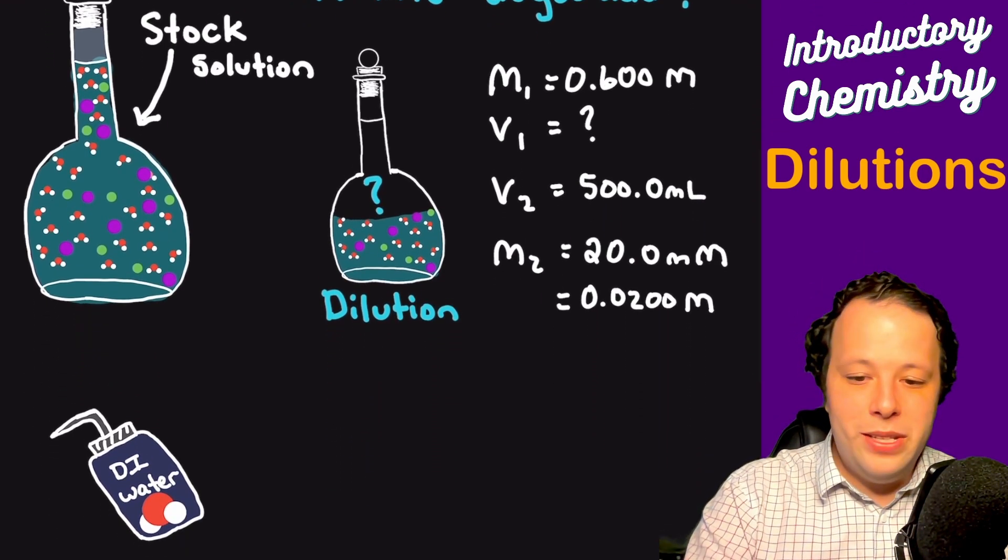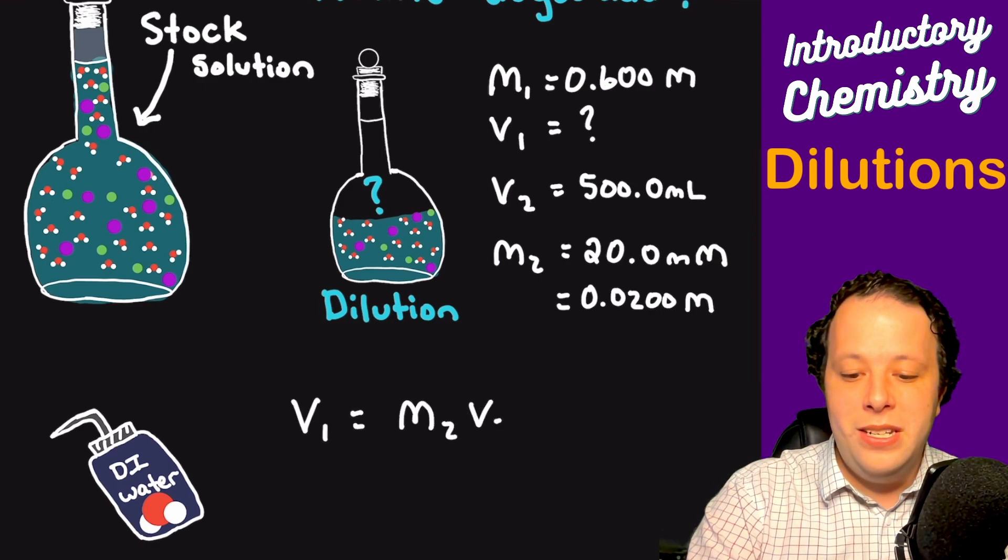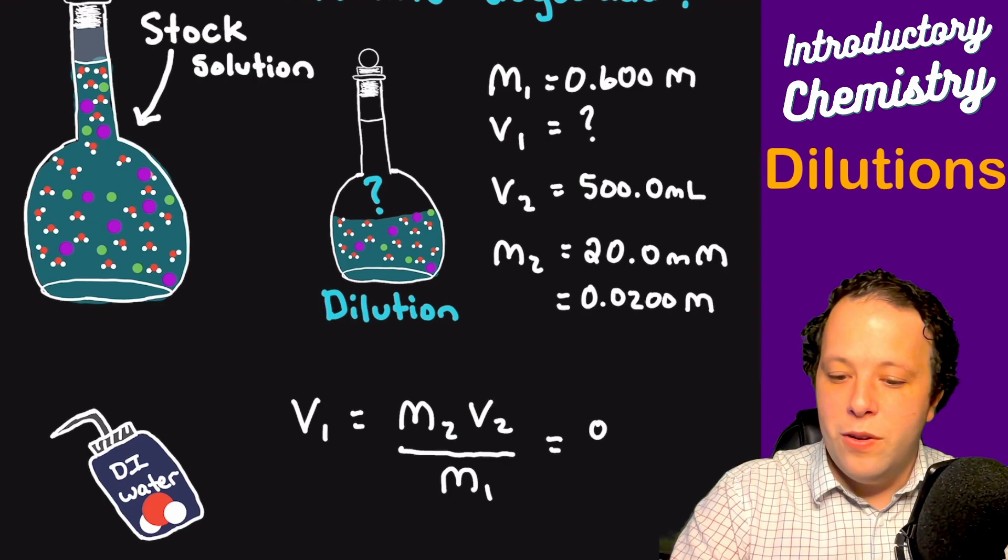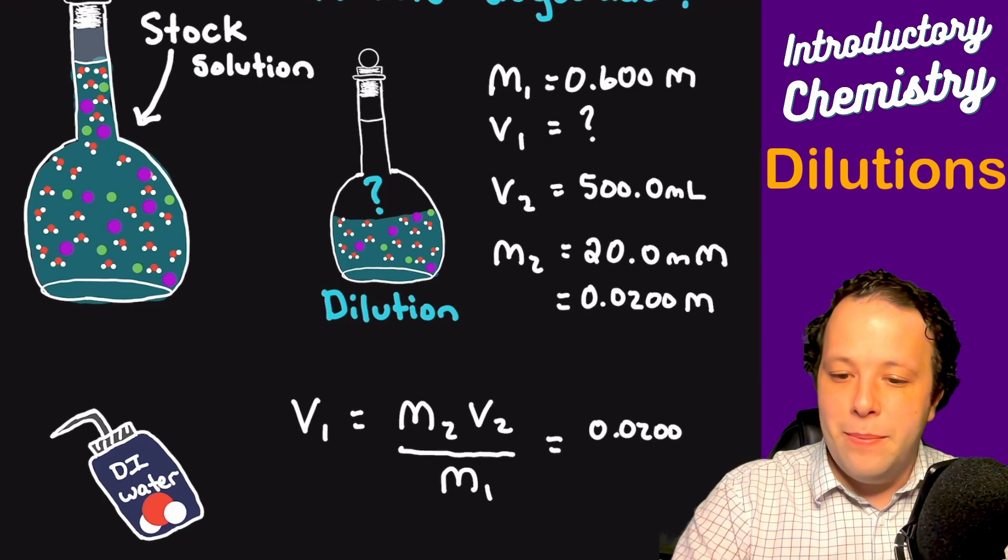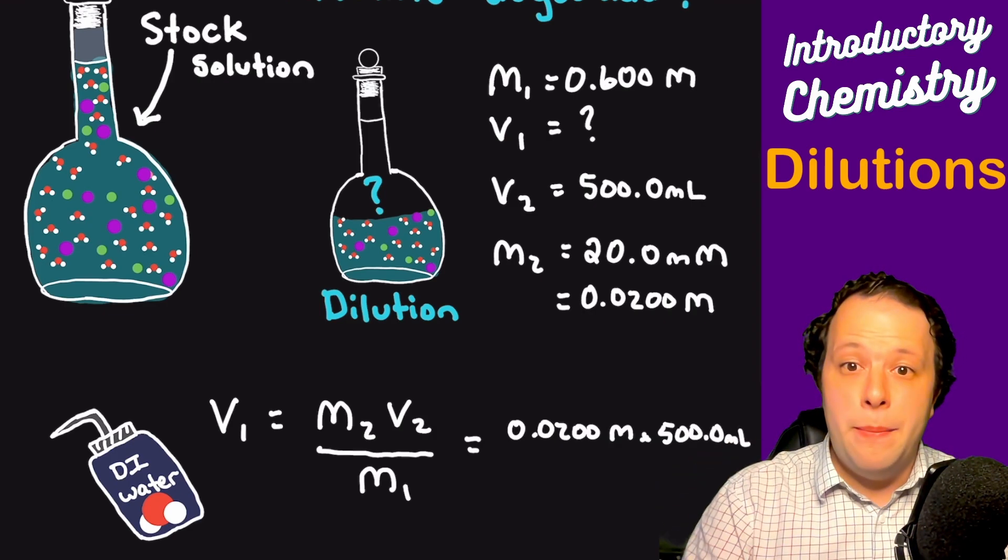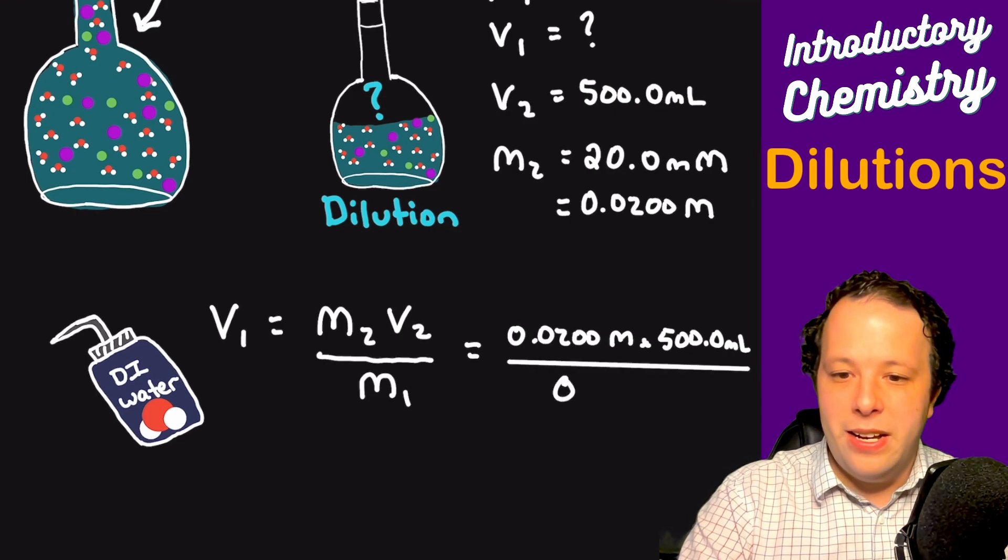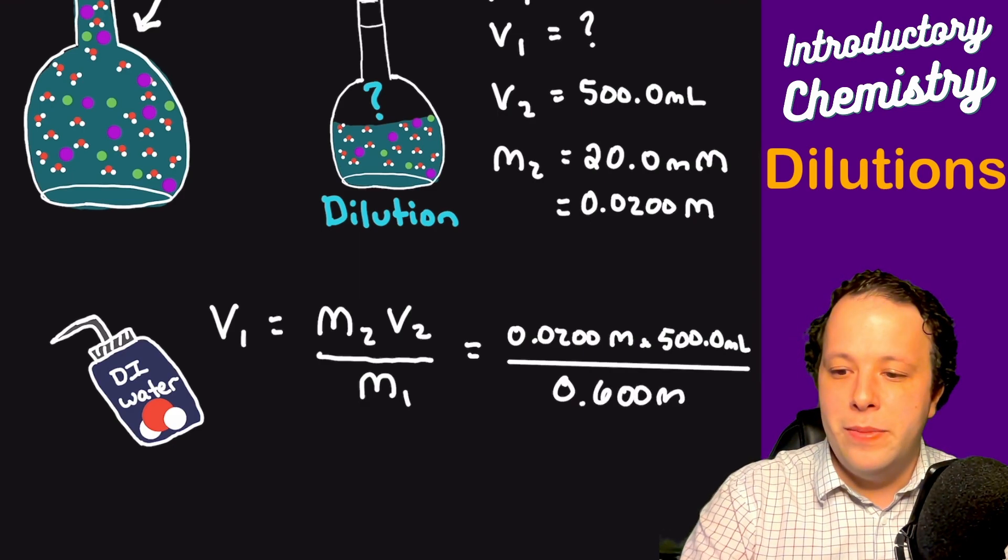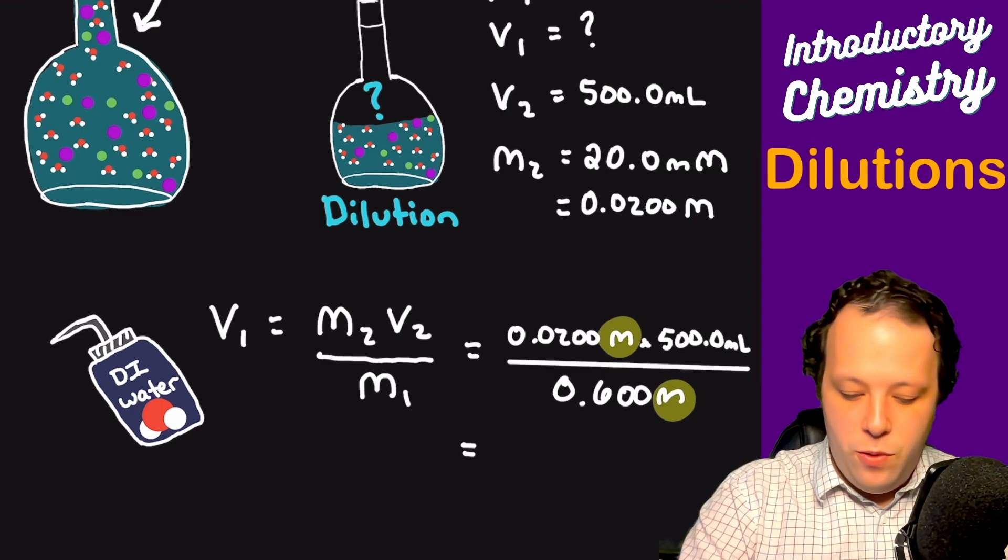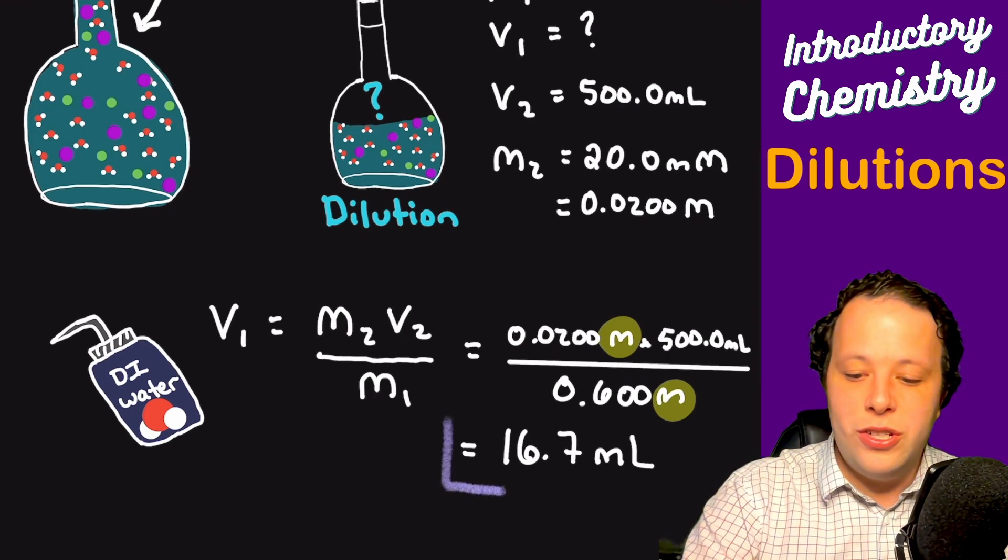V1 equals M2V2 divided by M1. We'll take 0.0200 times 500. Notice how important it was to make sure the units match—if they don't, you're not going to get a right answer. We have 0.600 molar on bottom. The two terms cancel out, which is great. That's going to leave us with 16.7 milliliters of solution is required.